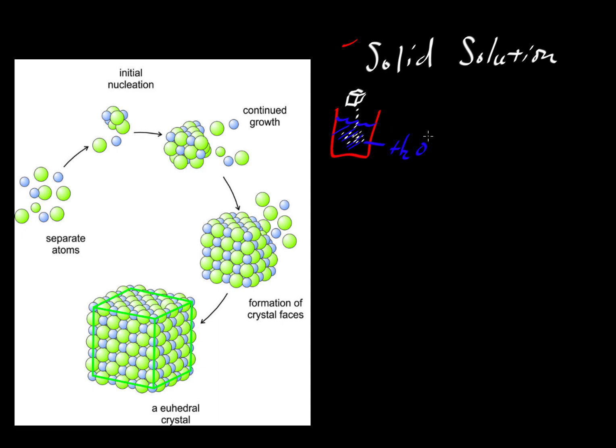So what do we have here? We have a single phase, a liquid, and in that liquid we have a mixture of H2O plus sodium chloride, the halite that we've dissolved into it.